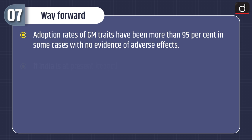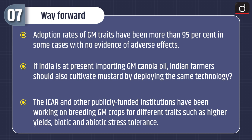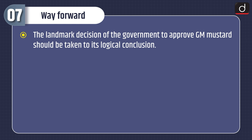Lastly, let's discuss the way forward. Adoption rates of GM traits have been more than 95% in some cases with no evidence of adverse effects. If India is at present importing GM canola oil, Indian farmers should also cultivate mustard by developing the same technology. The ICAR and other publicly funded institutions have been working on breeding GM crops for different traits such as higher yields, biotic and abiotic stress tolerance. The landmark decision of the government to approve GM mustard should be taken to its logical conclusion.